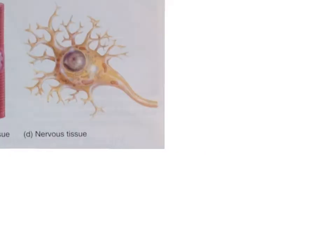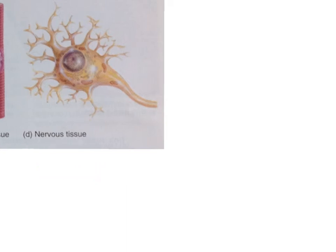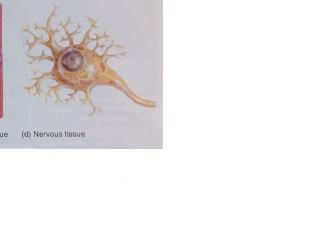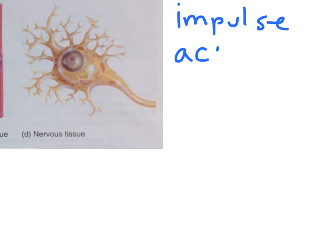And finally, nervous tissue is made up of neurons, or as they're commonly called, nerve cells. These are found in the brain, spinal cord, and the various peripheral nerves of the body. Nervous tissue is able to detect changes to the internal and external environments of the body. These changes are called stimuli. Upon detection of a change, nervous tissue is able to communicate this change to other cells by producing a nerve impulse, which we also call an action potential.